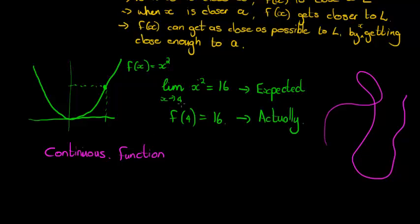I can only draw something without lifting my hand when what I expect to happen actually happens. So, for example, as I'm drawing, as I'm expecting that when I come to 4, to be at 16 on the y-axis, if that didn't happen, let's say all of a sudden I had to be there, I had to jump over there, then that would not be continuous. But since what I expect to happen actually happens, I can draw this continuously.